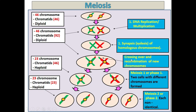Step three is crossing over and recombination of new chromosomes. A piece of the green chromosome moves onto one of the red chromatids, and a piece of the red moves over to the green. This results in the formation of two new chromosomes. This is important in sexual reproduction — it is why two offspring will not look the same unless they are identical twins. Crossing over creates genetic variation among brothers and sisters.